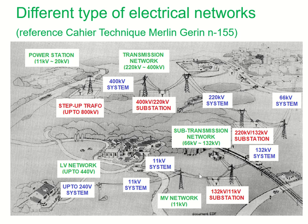From the sub-transmission network, power is transmitted to substations located near residential areas, where the power is reduced from 132 kV to 11 kV. This 11 kV level is called the medium voltage network. This medium voltage network is huge — if you look in cities you can see large lines of either underground or overhead 11 kV network running across the streets.